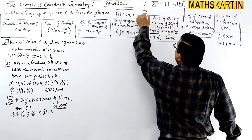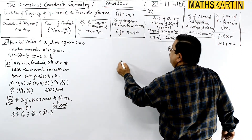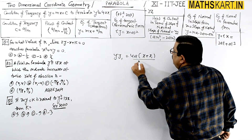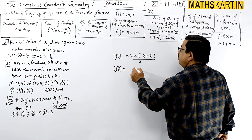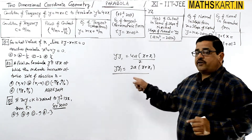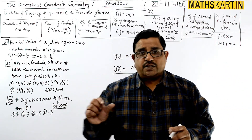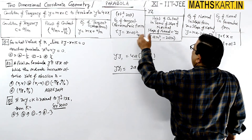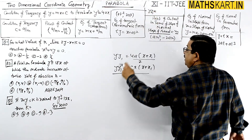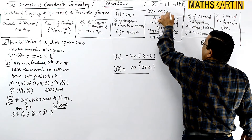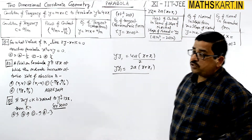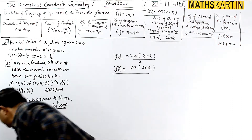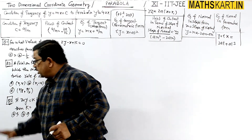If a single point is given, the tangent becomes yy1. It equals to 2a(x + x1)/2, so it becomes yy1 equals to 2a(x + x1). This is the equation of tangent at the point x1, y1, where that particular point lies on the parabola. We discussed this in general form for the circle as well.